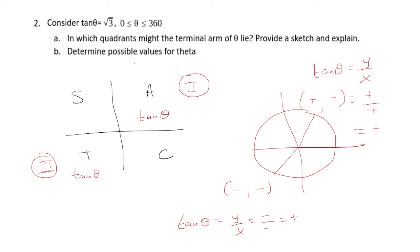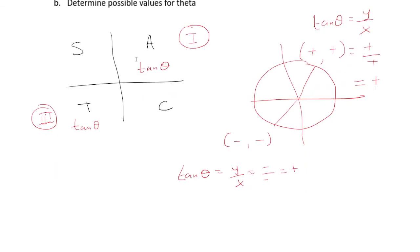Now, for part b, we want to determine possible values for theta. The key to solving this is to rewrite square root of 3 as follows.